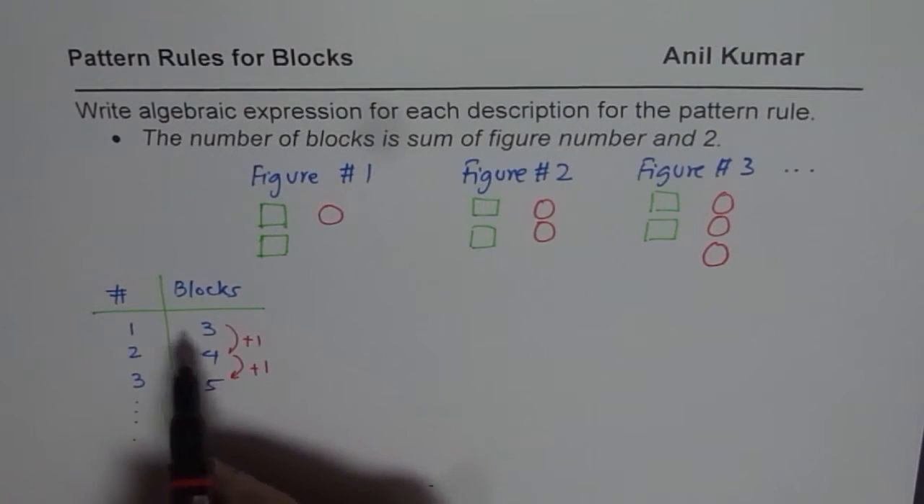So let me show you. If it is increasing by one, I should multiply by one. What is one times one? One times one is one. How do you get three? Well, we can add two to it.